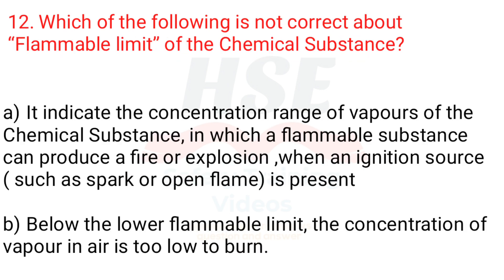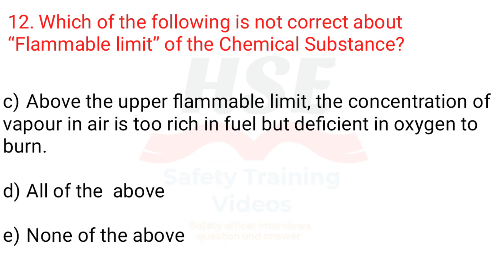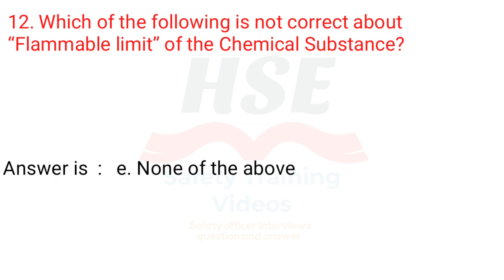Question 12: Which of the following is not correct about flammable limit of the chemical substance? A. It indicates the concentration range of vapors of the chemical substance in which a flammable substance can produce a fire or explosion when an ignition source such as a spark or open flame is present. B. Below the lower flammable limit, the concentration of vapor in air is too low to burn. C. Above the upper flammable limit, the concentration of vapor in air is too rich in fuel but deficient in oxygen to burn. D. All of the above. E. None of the above. The answer is E. None of the above.